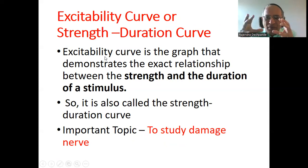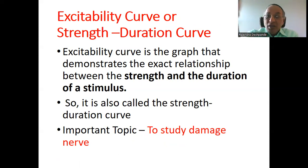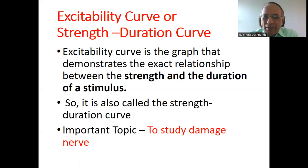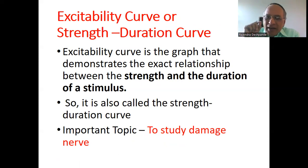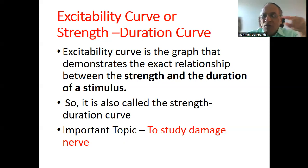Excitability — whenever the muscle is getting any stimulus, it gets excited: contraction, relaxation, contraction, relaxation. This is the most important property of a muscle. The excitability curve is nothing but a graph that indicates the relation between the strength and the duration of stimulus. How much will be the strength and how much will be the duration? That relation is called the strength duration curve.